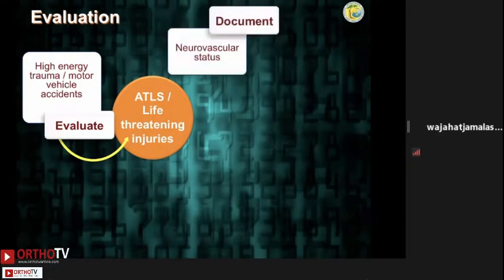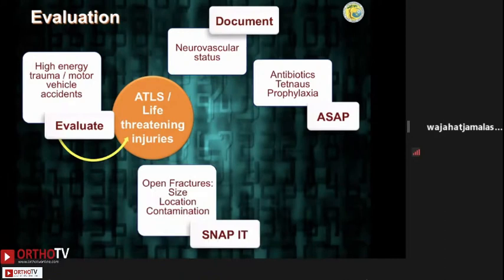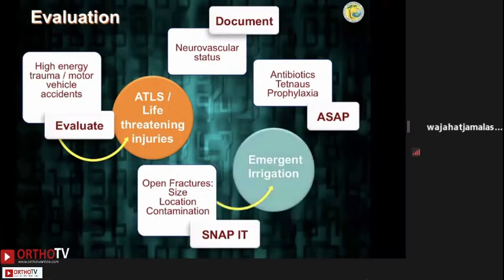Document the neurovascular status. Proceed with systemic antibiotics and tetanus prophylaxis if required. Then document the size, contamination, and location of the wound. I always tell my juniors that it's a good habit to take clinical photographs of the wounds before doing anything else. Then proceed for generous emergent irrigation.